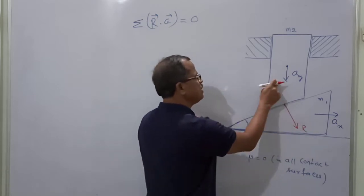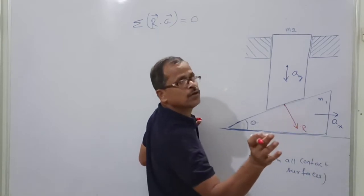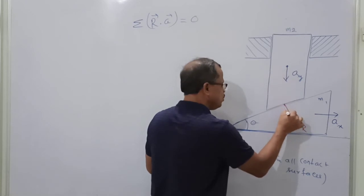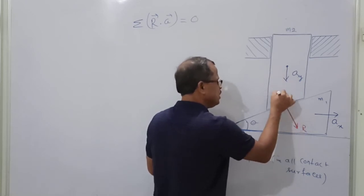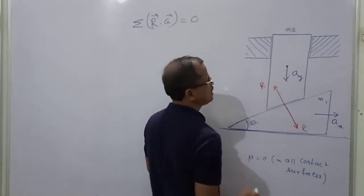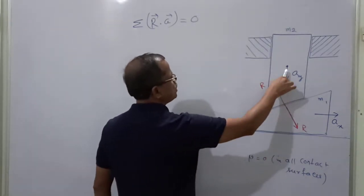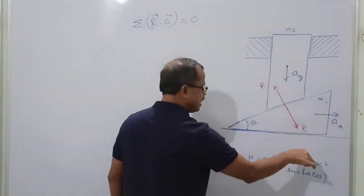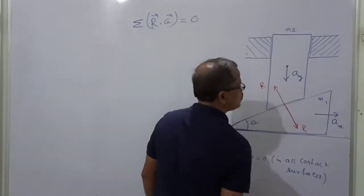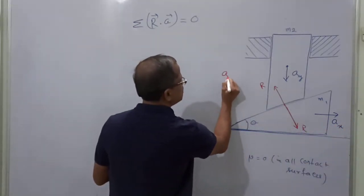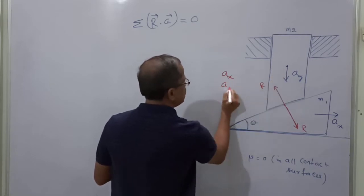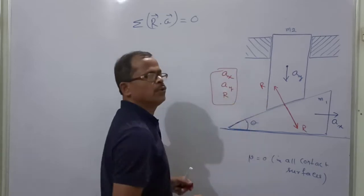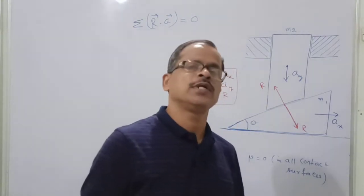This normal reaction is given by this body on the wedge. According to Newton's third law — action and reaction pair — the same reaction on the wedge will be in the opposite direction. Due to this R, the wedge is coming down. And due to this R, the component of R will give motion to the right. The unknowns in this problem are AX, AY, and the reaction R. To find three unknowns, we need to develop three equations.